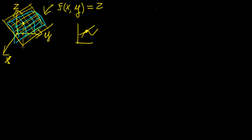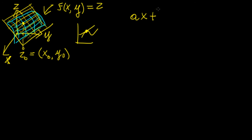We're going to call this point (x0, y0). That's going to be our point. Now how do we find that using partial derivatives? The equation of a plane is usually written as ax plus by plus cz plus d equals to 0, where a, b, c, and d are constants.